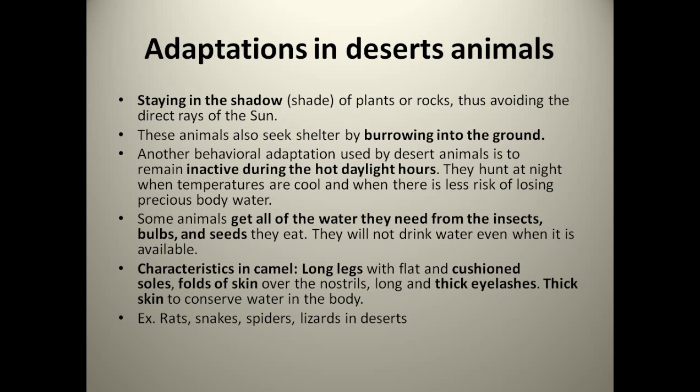Most small animals found in desert areas live under a burrow. A burrow is a type of hole made in the land. Another behavioral adaptation used by desert animals is to remain inactive during the hot daylight hours. They hunt at night when temperatures are cool, and there is less risk of loss of body water.